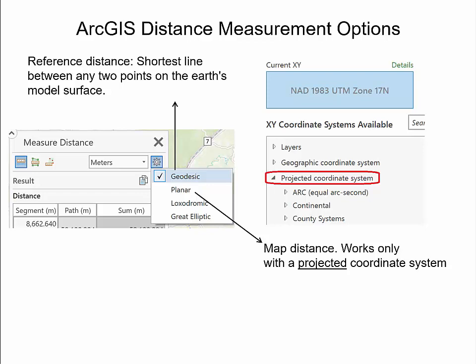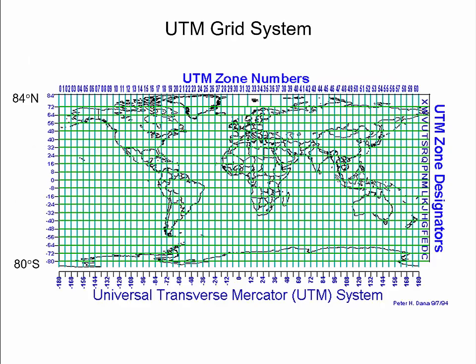If no projected coordinate system but a geographic coordinate system is chosen for the map instead, then the map distance option will be grayed out. The proposed method of map accuracy assessment can be applied for any map projection. This video will use the UTM coordinate system as an example to showcase this approach.